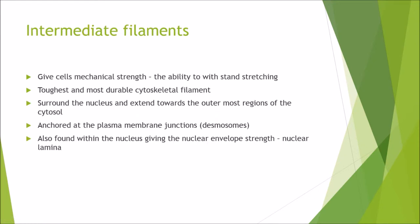Intermediate filaments give cells mechanical strength — the ability to withstand stretching. They are the toughest and most durable cytoskeletal filament. They surround the nucleus and extend towards the outermost regions of the cytosol. They are anchored at the plasma membrane junctions called desmosomes, and are also found within the nucleus, giving the nuclear envelope strength via a structure called the nuclear lamina.